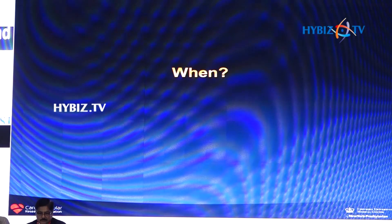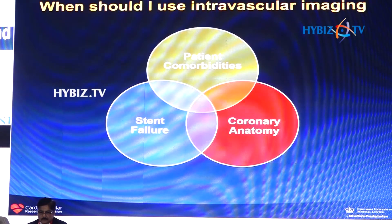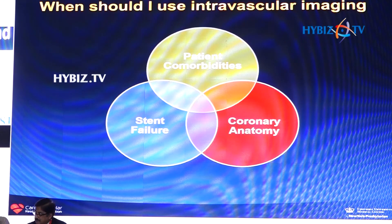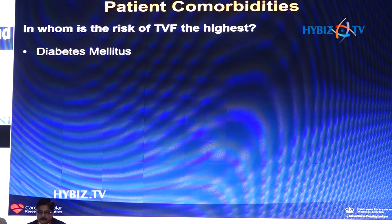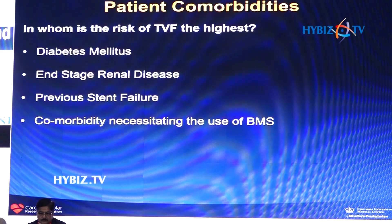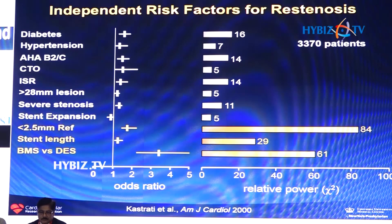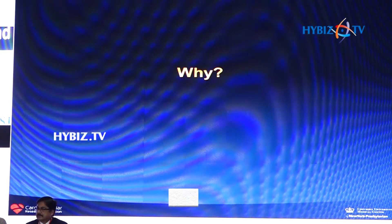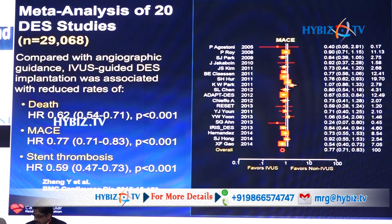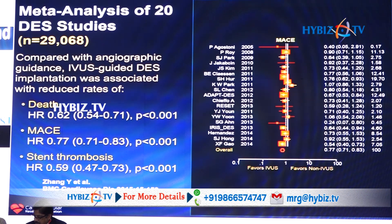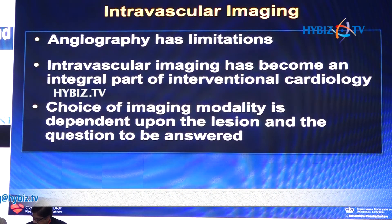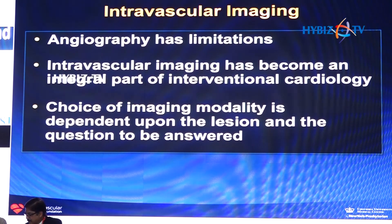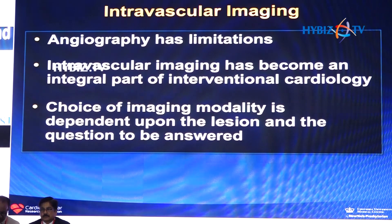So when should you use intravascular imaging? You already know which patients are most likely to have a target vessel failure: diabetes, end-stage renal disease, previous stent failure, comorbidities necessitating the use of bare metal stent. If we look at the risk factors for restenosis, you can see exactly which patients are most likely to benefit from imaging. Because if you use intravascular imaging, you improve clinical outcomes — not only in complex patients but in simple patients; all patients have a benefit from intravascular imaging guidance. In conclusion, angiography clearly has limitations, intravascular imaging has become an integral part of interventional cardiology, and the choice of imaging modality is dependent upon the lesion and the question to be answered.